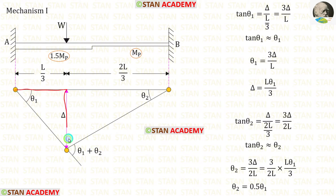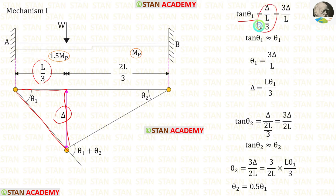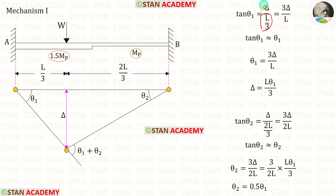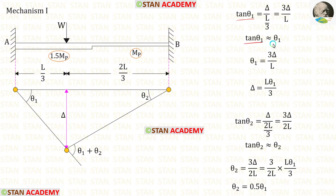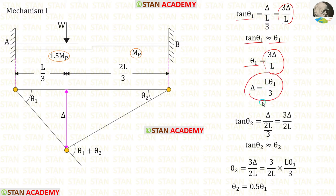Let us take this triangle. In this triangle, tan theta1 is equal to delta upon L upon 3. Taking L upon 3 inversely and multiplying with delta, we get 3 delta upon L. Since the value of tan theta1 is very small, tan theta1 is approximately equal to theta1. So theta1 is equal to 3 delta upon L, and delta is equal to L theta1 upon 3.